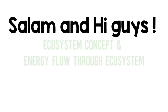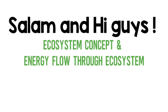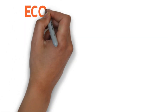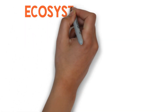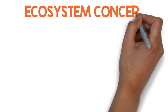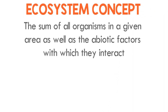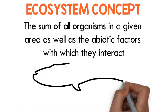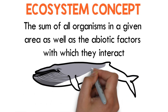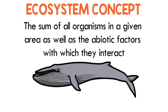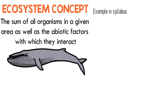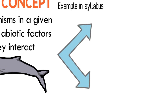We will discuss energy flow through an ecosystem. First, we define what an ecosystem is. An ecosystem is the sum of all organisms in a given area as well as the abiotic factors with which they interact. This definition is coined from the Campbell book. It can be divided into two types: the first one is a lake ecosystem and the second is a terrestrial ecosystem.